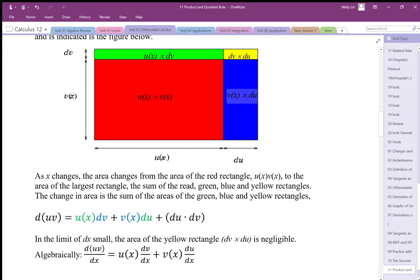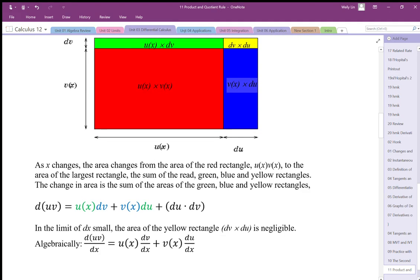So algebraically, it starts to look like this. We end up with, as x changes the area, the area changes with the green, and the blue, and the yellow. And the sum of the areas, those changes.